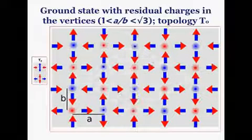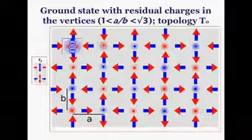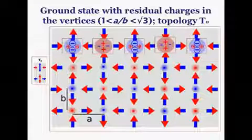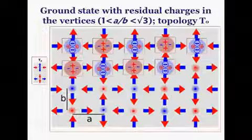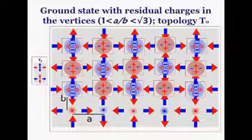Considering A over B bigger than one, the ground state of the rectangular lattice will exhibit residual charges in all vertices, if A over B is smaller than square root of three.